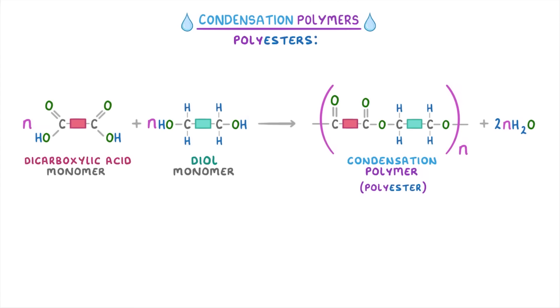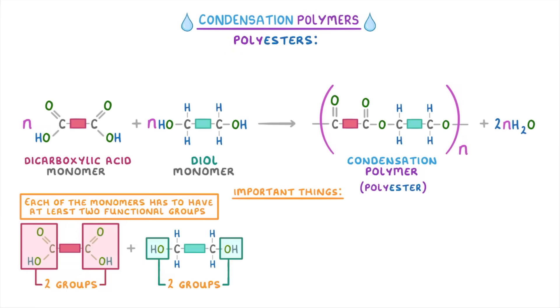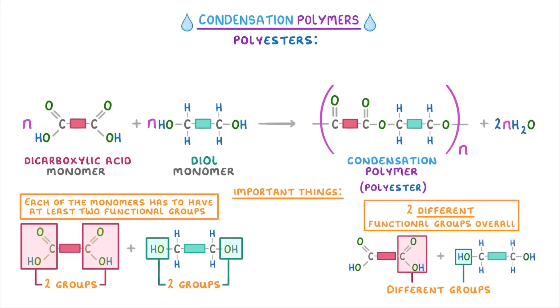In order for molecules to be able to combine in condensation polymers, there's a few important things that they need to have. One is that each of the monomers has to have at least two functional groups—for example, our dicarboxylic acid has two carboxyl groups and our diol has two alcohol groups. Second, there needs to be at least two different functional groups overall, so here we have the carboxyl and the alcohol group. And finally, a small molecule is given off in the process, which is generally water.